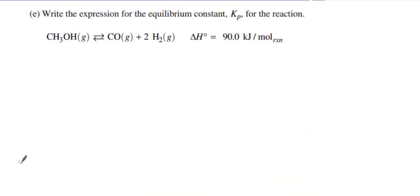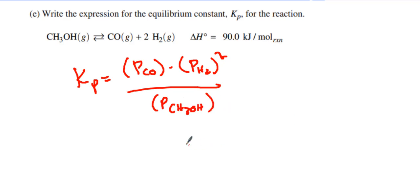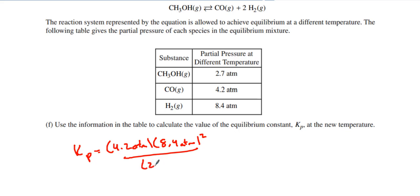Then we need to find the Kp. First, we write the Kp expression: it's the pressure of CO to the first power times the pressure of H2 squared, over the pressure of CH3OH. Using the values from the table — 4.2 atm for CO, 8.4 atm for H2 squared, over 2.7 atm — I get 109.76 on my calculator, which rounds to 110 as the value for Kp.